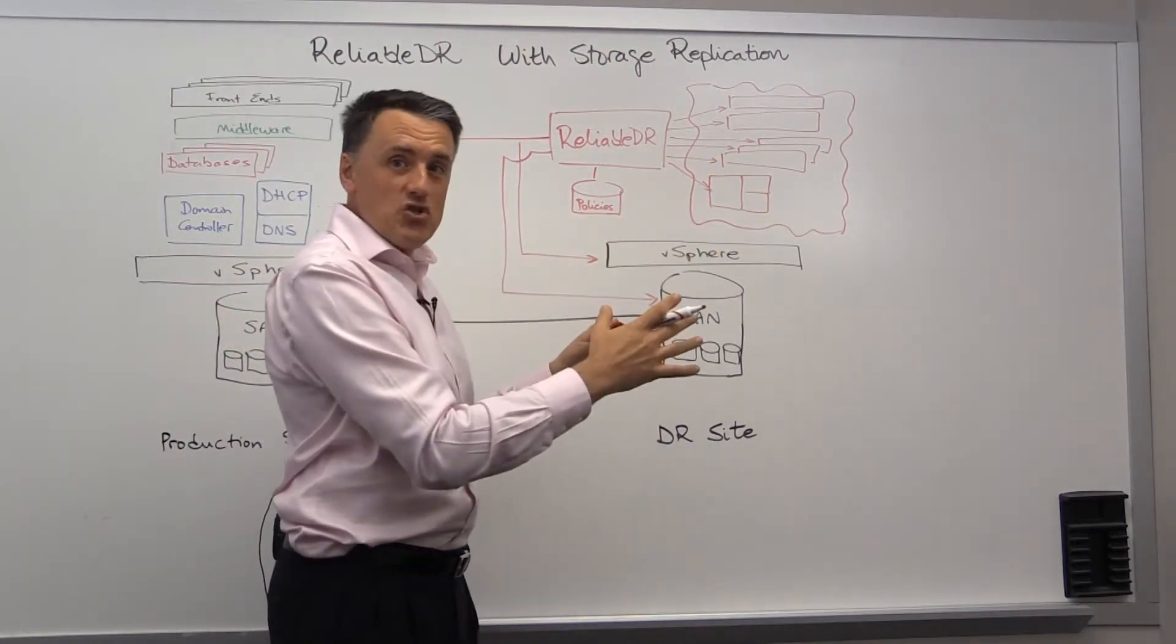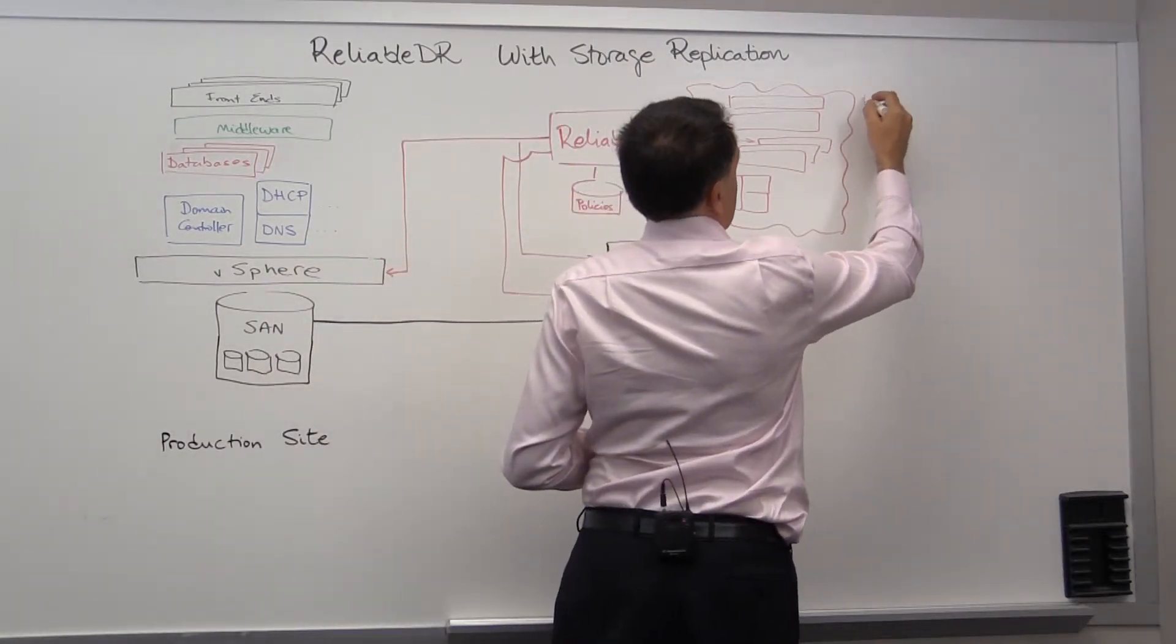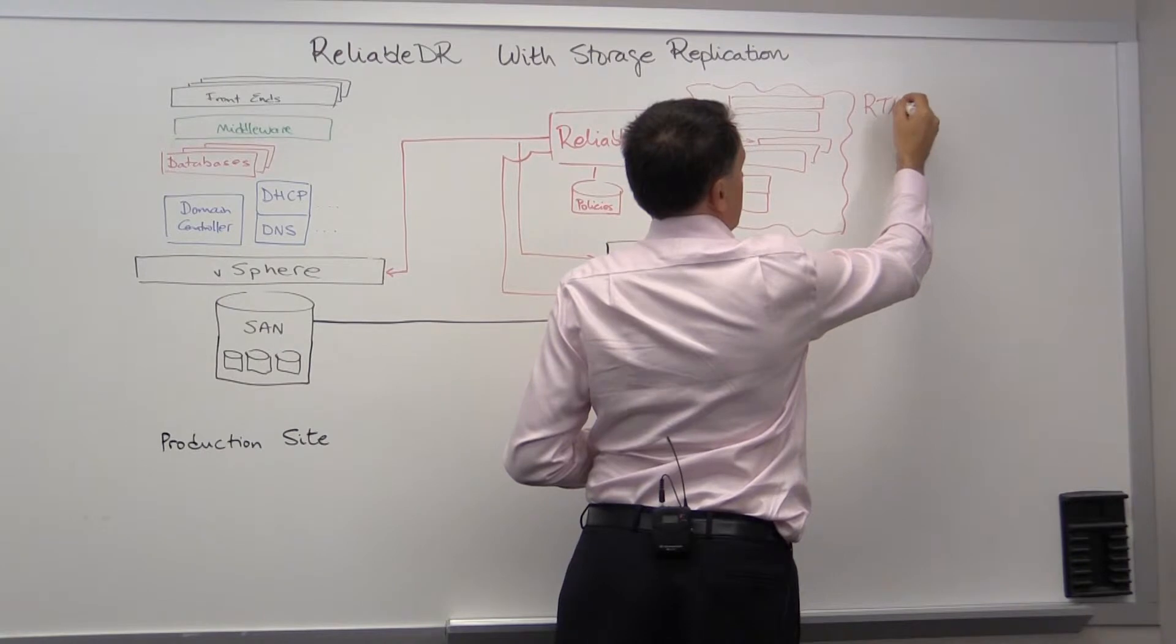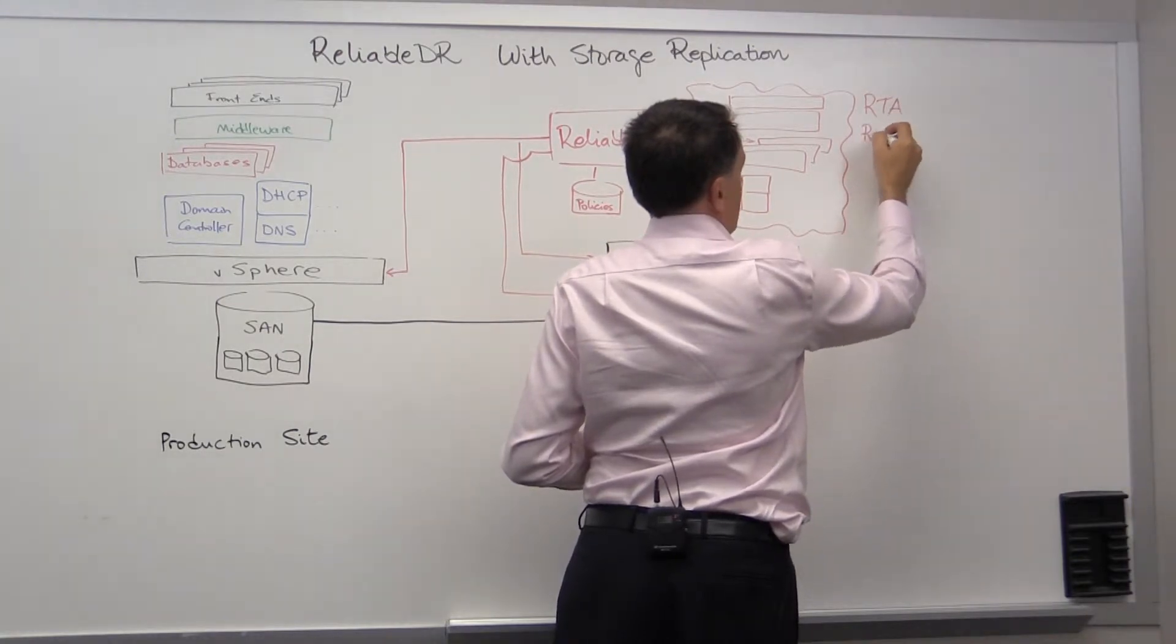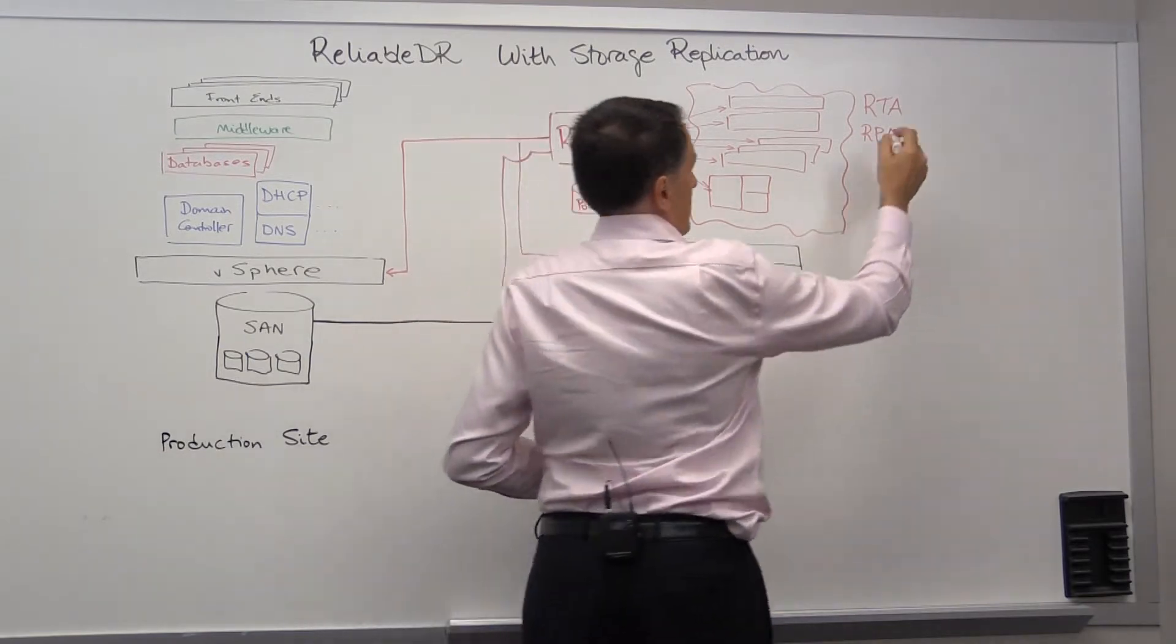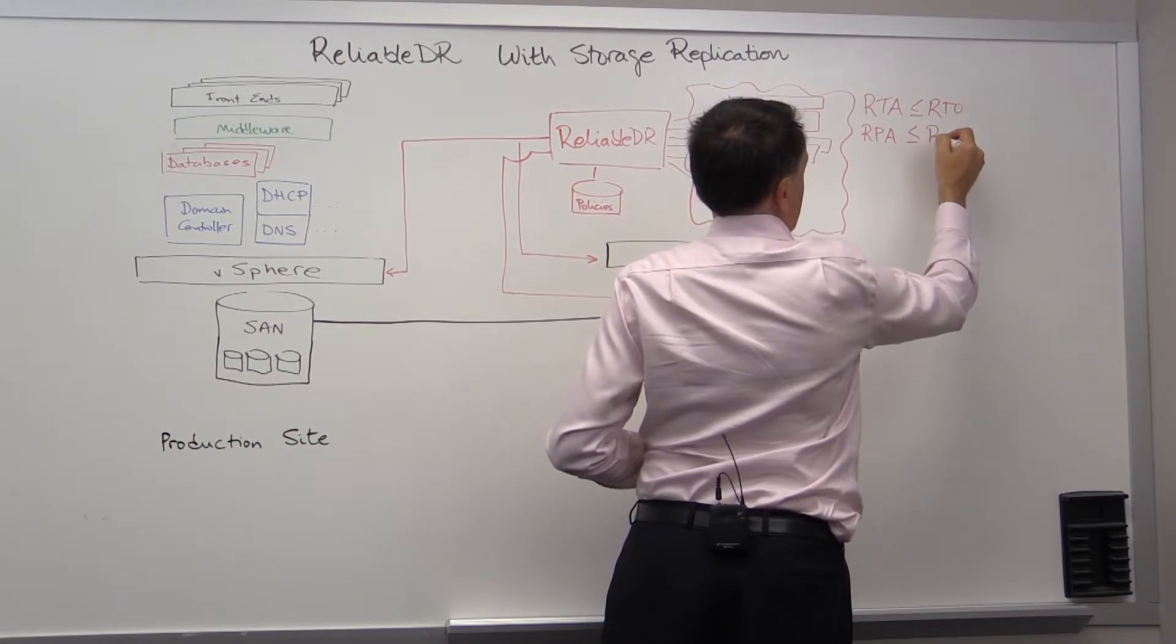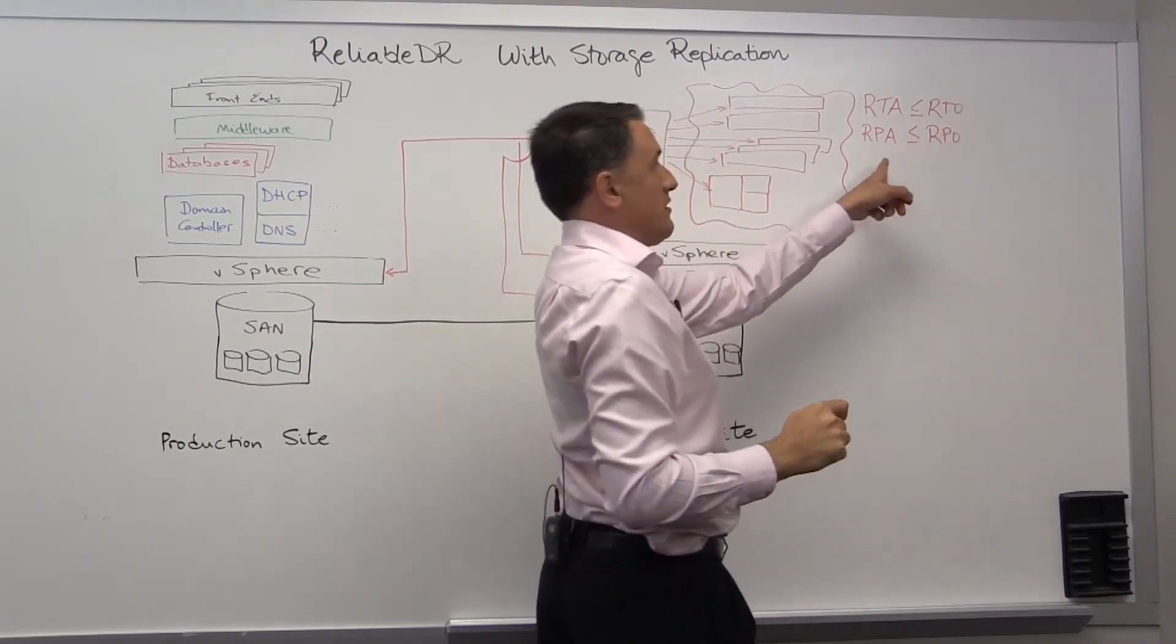When the entire application is up and running, and it is running correctly according to policies, then Reliable DR will calculate the recovery time actual and the recovery point actual, and will check that against the policy—is it less than or equal to the respective objectives.